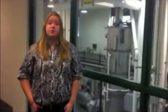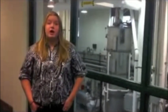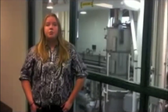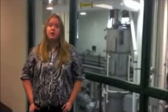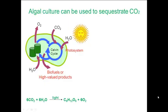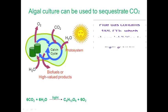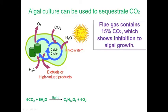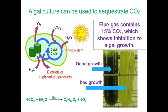For this project, microalgae are used because of their high growth rates. Under proper control and regulation, we can harvest biomass and biofuels from this system. Algal cultures can be used to fix carbon dioxide from the environment. However, high carbon dioxide concentration, like in flue gas, will inhibit the algal growth. As we can see from the picture, the cell density is very low when the algae are exposed to high carbon dioxide levels.